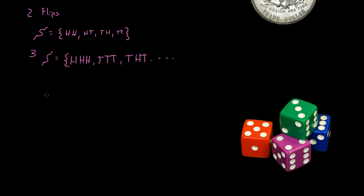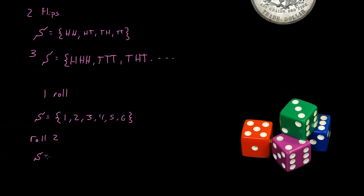Now let's go on to rolling a die one time. What's the sample space of rolling a die once? It could be one, two, three, four, five, or six. What about rolling it two times? The sample space size is 36 — that's just six times six. So that is the sample space of rolling a die twice, and notice that is just six to the number of times you roll it. Six squared is just six times six, which is 36.